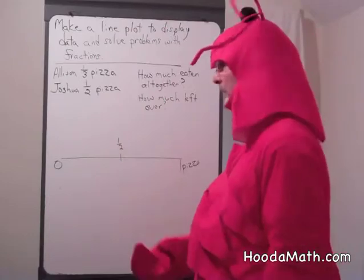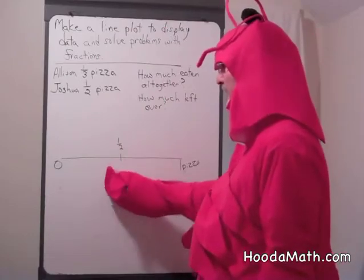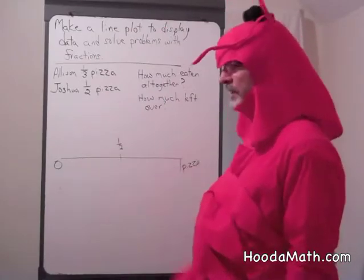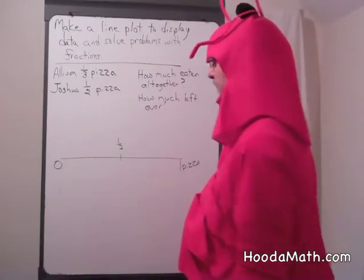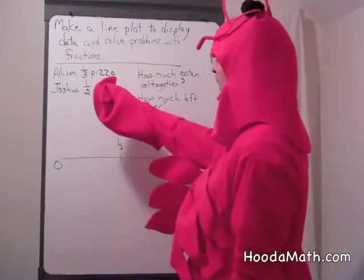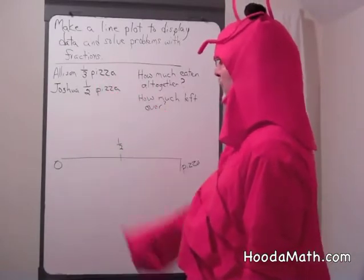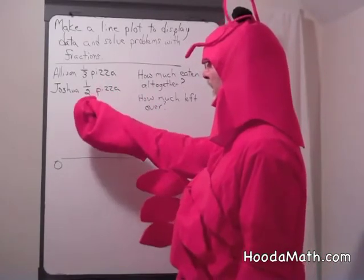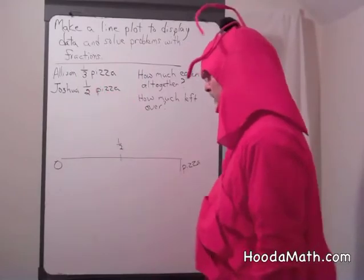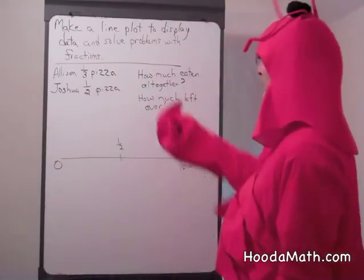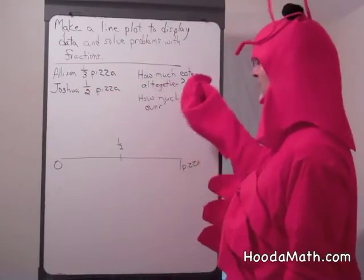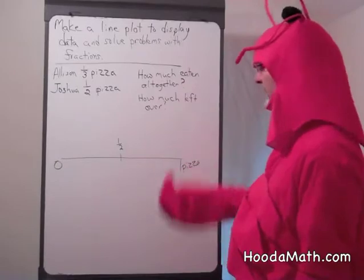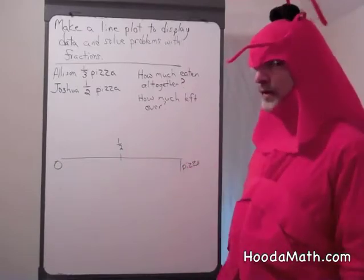We're going to solve this problem using a line plot and what we know about fractions. Allison ate one-third of a pizza. Her brother Joshua ate half of the pizza. How much was eaten altogether and how much was left over, if any?